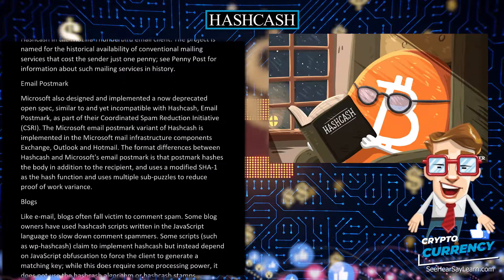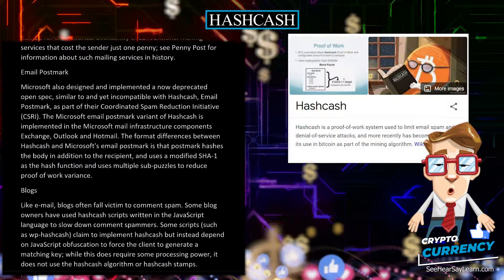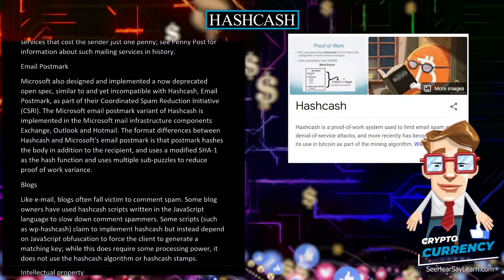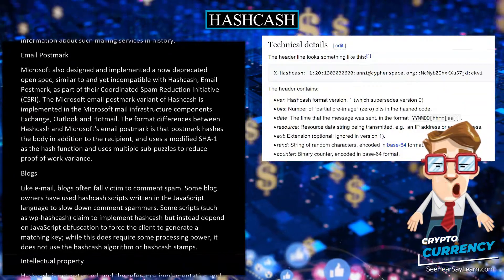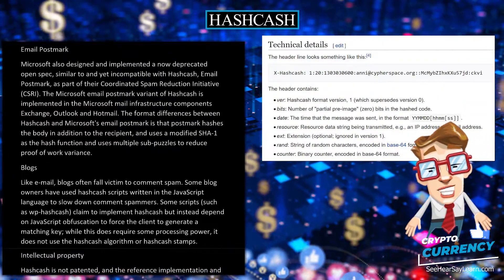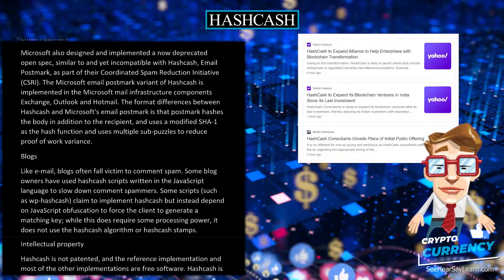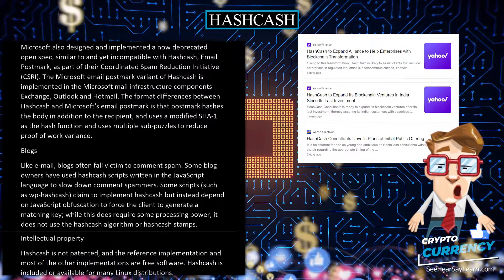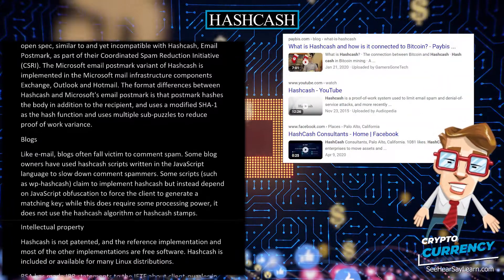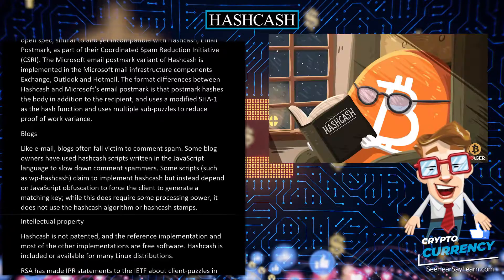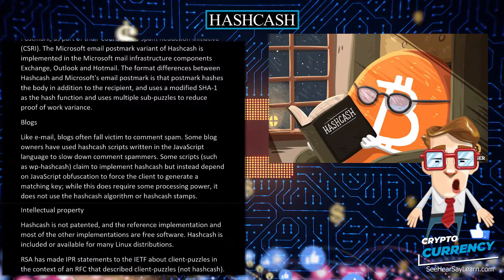Blogs. Like email, blogs often fall victim to comment spam. Some blog owners have used hashcash scripts written in the JavaScript language to slow down comment spammers. Some scripts, such as wp-hashcash, claim to implement hashcash but instead depend on JavaScript obfuscation to force the client to generate a matching key. While this does require some processing power, it does not use the hashcash algorithm or hashcash stamps.